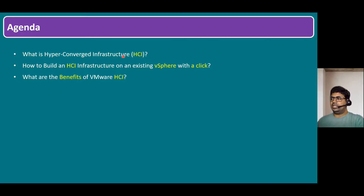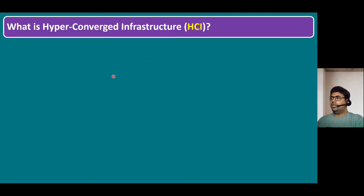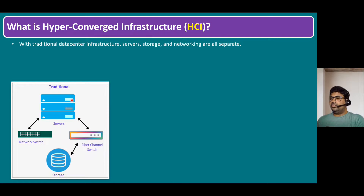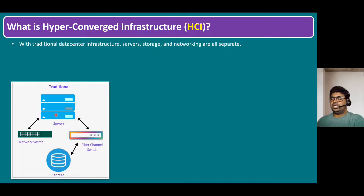Let's start with the first question. Before going to learn HCI, we need to understand how the traditional architecture worked. With the traditional data center infrastructure, we have servers and also storage connected with fiber channel switches and network devices — all are separated. It works like a siloed environment in a traditional infrastructure.